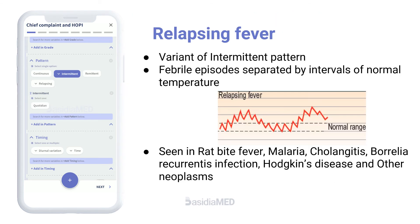If the patient's febrile episodes are separated by intervals of normal temperature, this pattern is known as relapsing fever. It is a variant of the intermittent pattern. Relapsing fevers may be seen in rat bite fever, malaria, cholangitis, infections with Borrelia recurrentis, Hodgkin's disease or Pel-Ebstein fever, and other neoplasms.